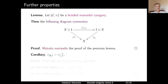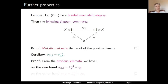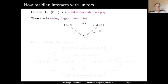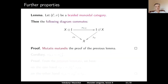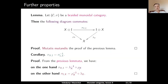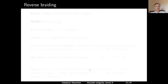Corollary: sigma_{X,I} = (sigma_{I,X})^{-1}. Proof: from the two commutative triangles given by the previous two lemmas, we have sigma_{X,I} = rho_X ∘ lambda_X^{-1} and similarly for sigma_{I,X}. Looking at both right-hand sides and comparing them, it is straightforward that sigma_{X,I} = (sigma_{I,X})^{-1}.